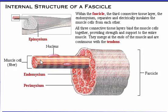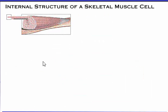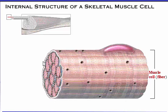The connective tissue layers merge at the ends of the muscle and are continuous with the tendons. Because skeletal muscle cells are elongated, they are often referred to as muscle fibers.